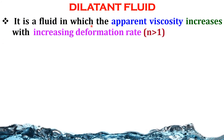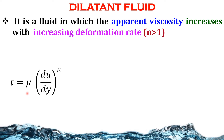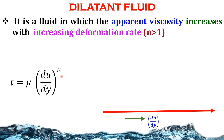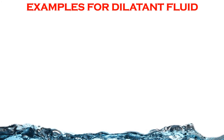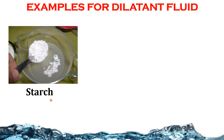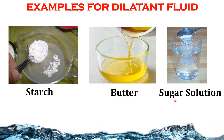Dilatant fluid: It is a fluid in which the apparent viscosity increases with increasing deformation rate. In dilatant fluid, n is always greater than 1. The formula is tau equals mu times (du/dy) to the power of n. When we plot a graph between velocity gradient and shear stress, we get a curve similar to the pseudoplastic fluid, but when we draw straight lines from the origin the slope decreases. Examples of dilatant fluids are starch, butter, and sugar solution.